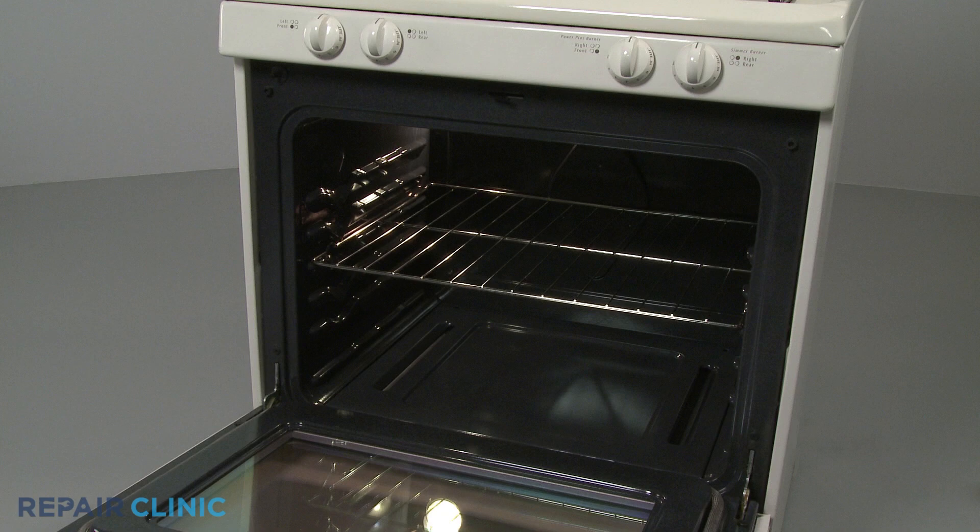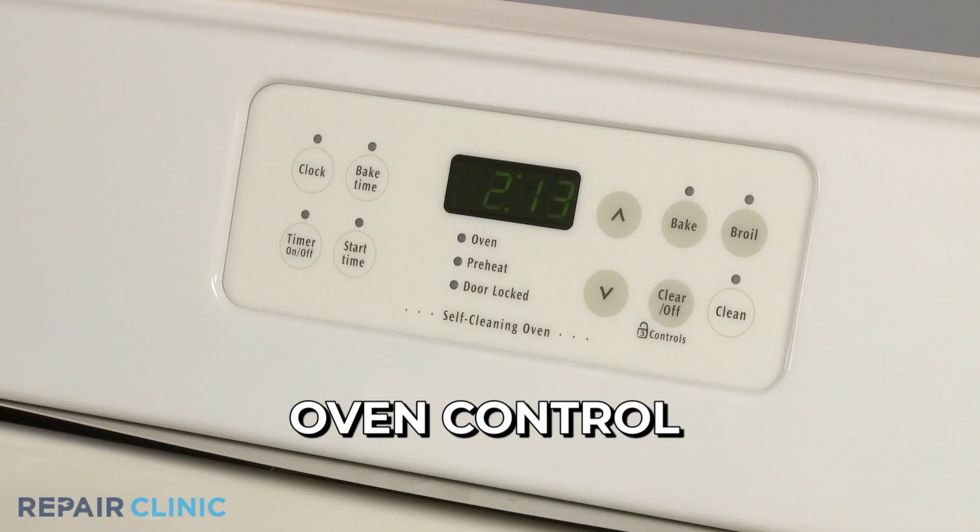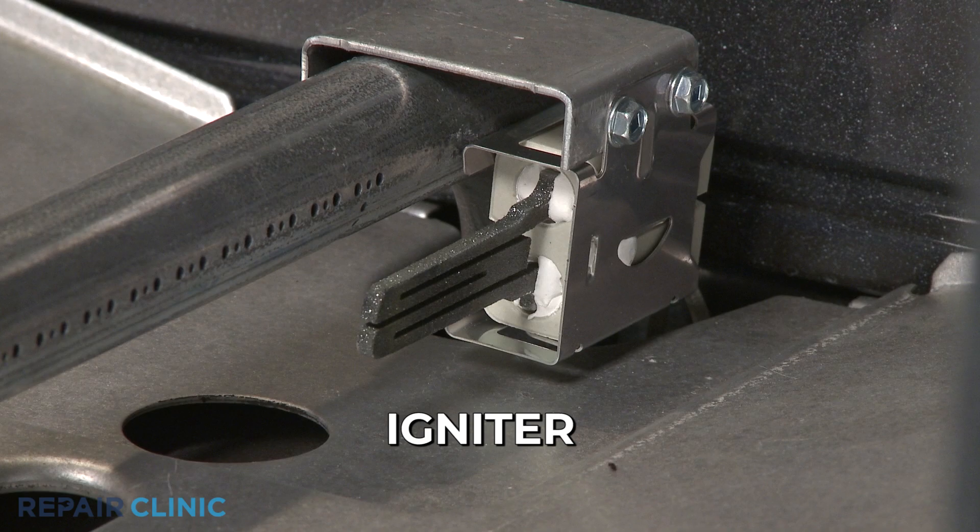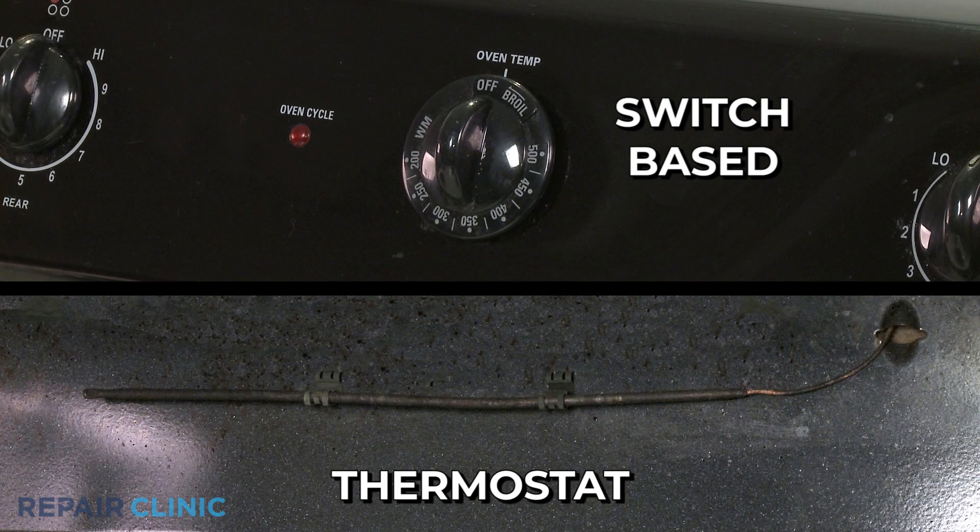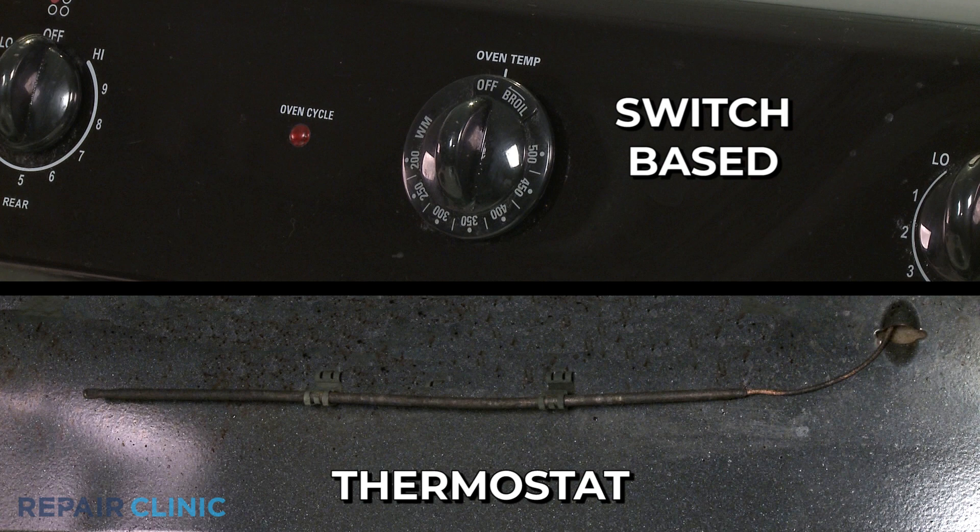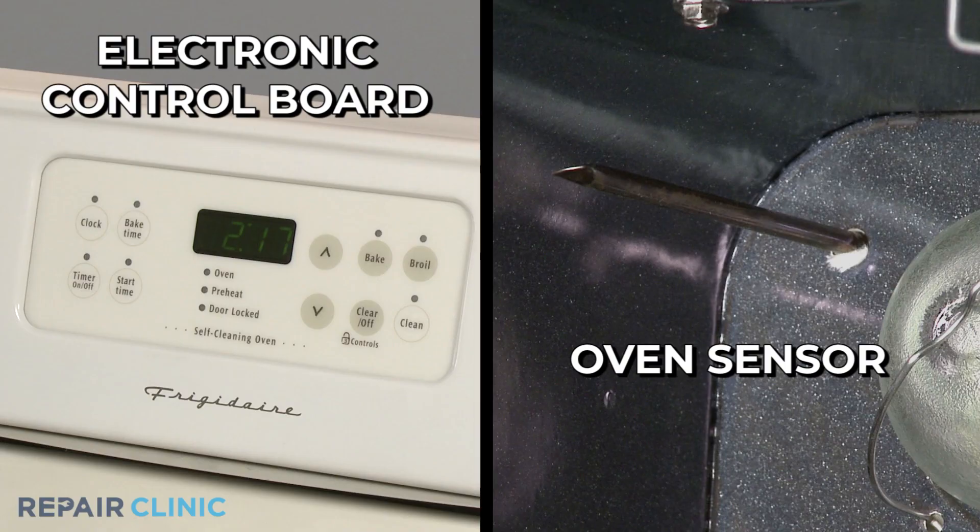A gas oven ignition system consists of three basic components: the oven control, the igniter, and the oven safety valve. The oven control may be switch-based with a thermostat and sensing bulb assembly or an electronic control board that works with an oven sensor.